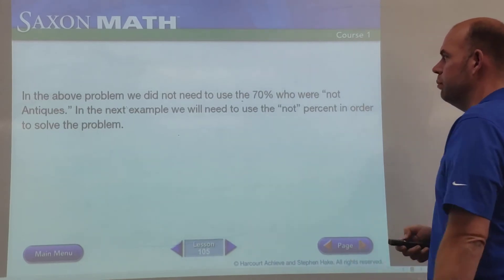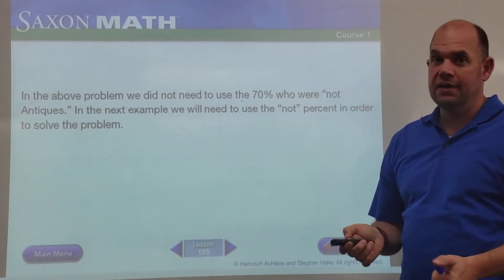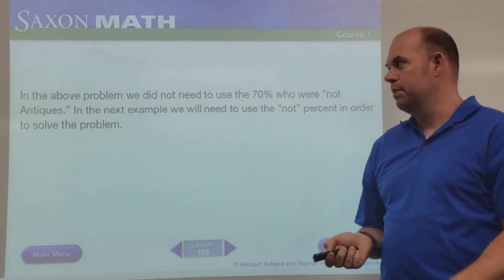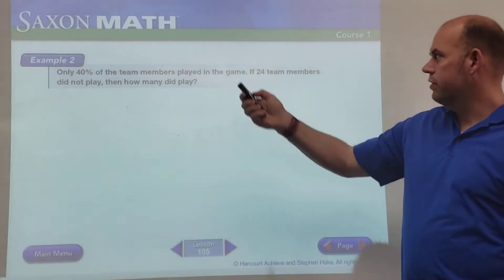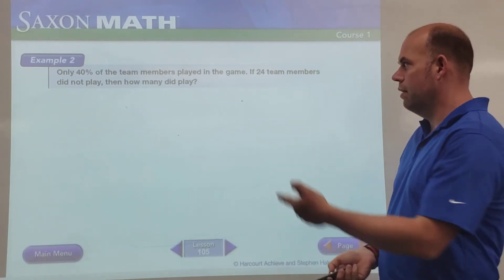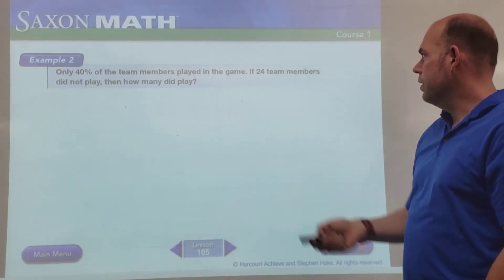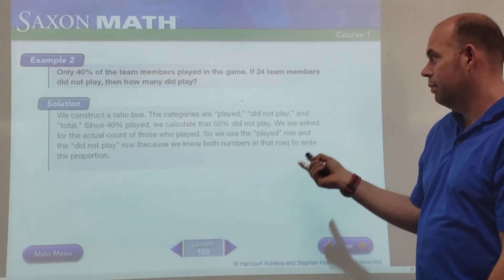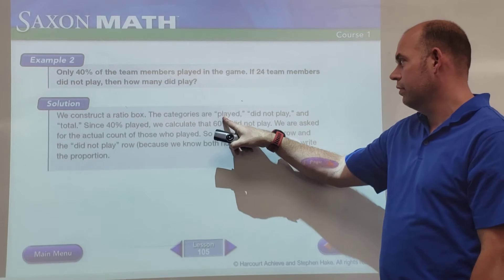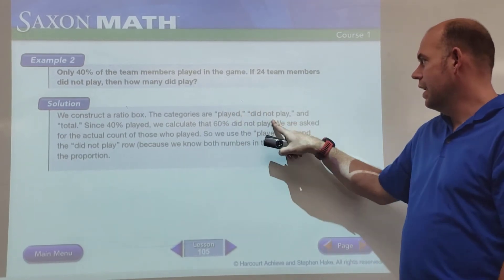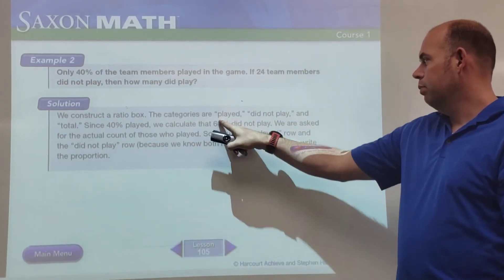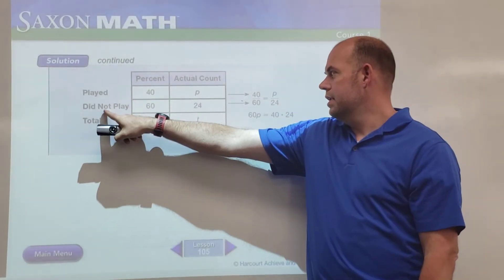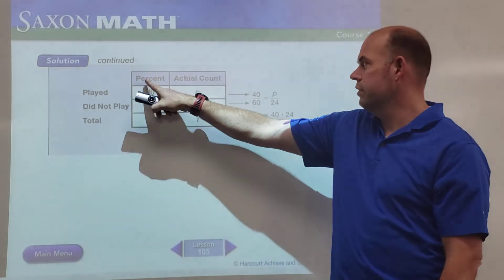So now in this problem we didn't need to use the 70 that were not antiques, but in the next one we will need to use the 'not,' so that's why we set that up in the table. So only 40% of the team played in the game—we have 40 over 100. If 24 team members did not play, how many did play? So we'll set up our table here. We're constructing our ratio box. We're going to look at played, did not play, and total, and then we'll plug in the numbers that we have. So we've got played, did not play, and total—percent and actual count.